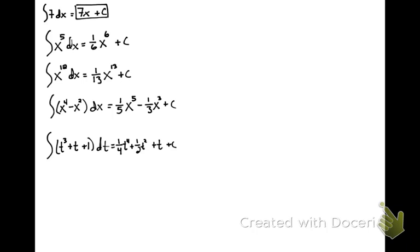Next, let's integrate 3x cubed dx. That would have come from something x to the 4th. Thinking through the power rule: 4 times what would give me 3? That's (3/4)x to the 4th plus c. One strategy is, as you're integrating, if you're not sure, take the derivative of what you think your answer is — you should get where you started, because you're just undoing a process.